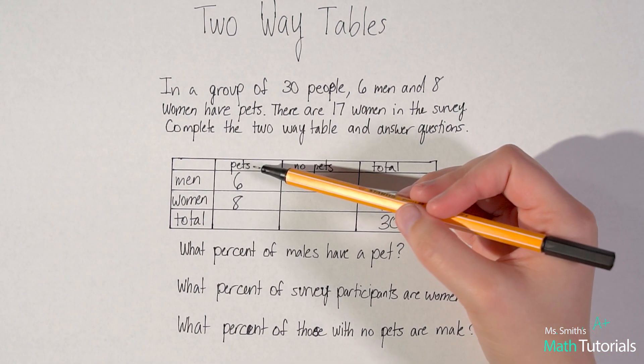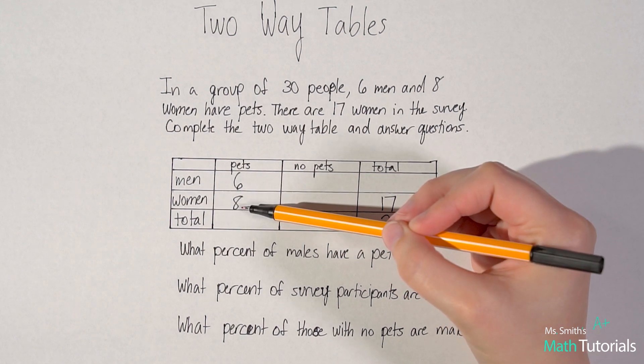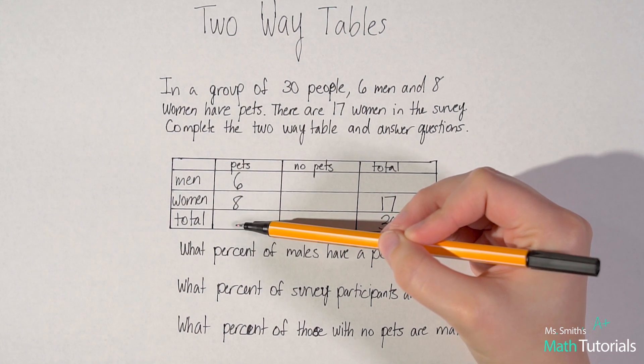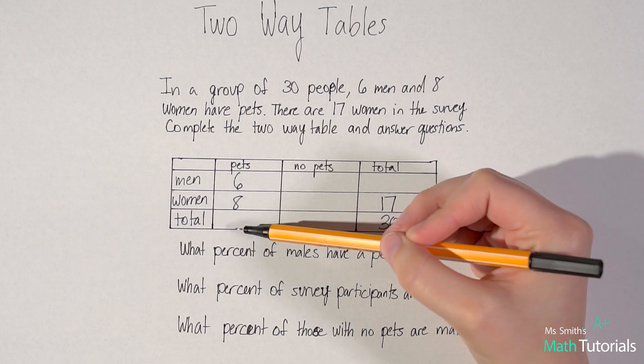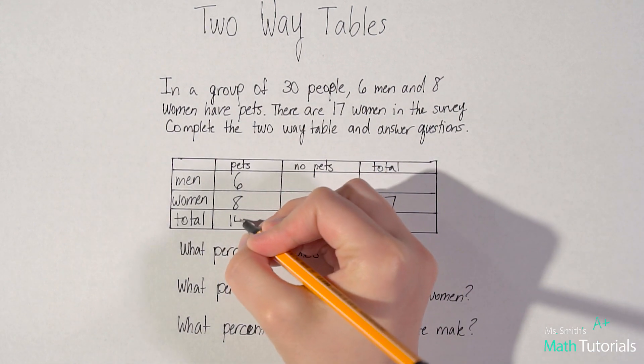All right, so I look here and I say, okay, people who have pets, six of them were men, eight of them were women. And then I've got my total column here. So can't I just do six plus eight is my total of pet owners? Yeah. And six plus eight is 14.